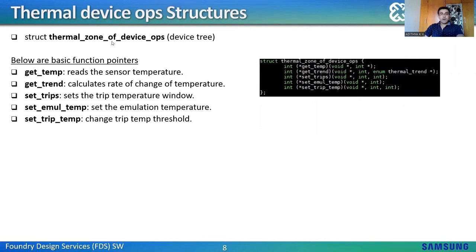The structure thermal_zone_of_device_ops is used when we fetch the thermal zone from the device tree based on device nodes. It is very similar to the previous structure. Important function pointers include: get_temperature, which reads temperature from the sensor; get_trend, which calculates the rate of change of temperature; set_trip, which sets the trip temperature window; set_emultemp, which sets the emulation temperature and enables emulation mode; and set_trip_temp, which changes the trip temperature threshold.